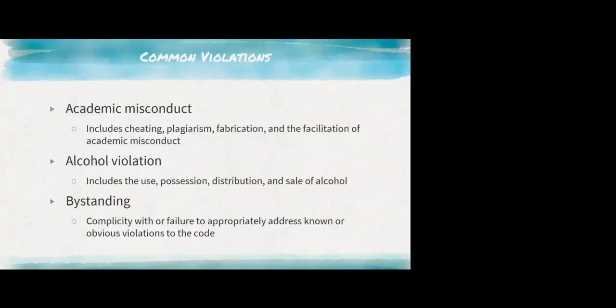We're moving into some common violations you may encounter. Academic misconduct is not something you'll deal with as directly, but it could happen if students are cheating in common spaces or practicing plagiarism — copying others' papers. If you pick up on it, you'd need to report it, as it falls under the Code of Community Conduct. Alcohol violations — use, possession, distribution, or sale of alcohol — tend to be one of the bigger categories.